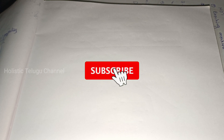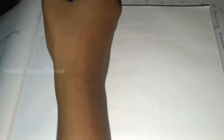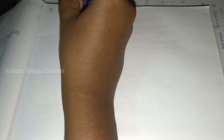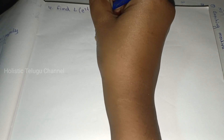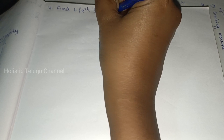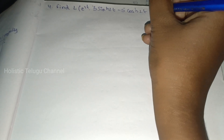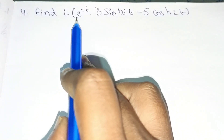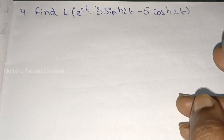Hi, hello, namaste! Welcome to Holistik Telgo channel. Today we are going to show the last model. Find the Laplace transform of e^(2t) into [3sinh(2t) minus 5cosh(2t)]. So this is our problem: Laplace transform of e^(2t) into [3sinh(2t) minus 5cosh(2t)].